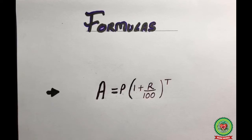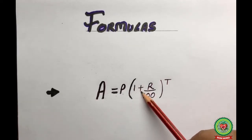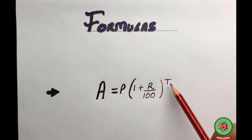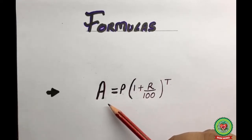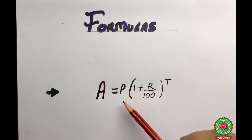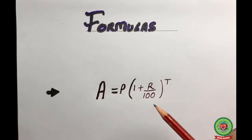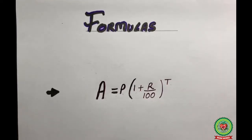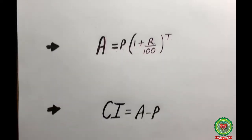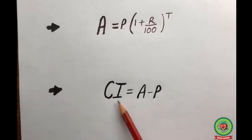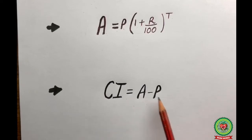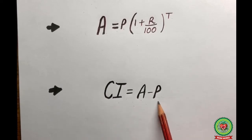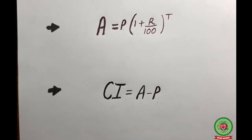The formula for calculating amount is: A = P(1 + r/100)^t, where A means amount, P means principal, r is the rate of interest, and t means the time period for which the money has been deposited. The formula for calculating compound interest is: CI = A − P, that is, compound interest equals amount minus principal.